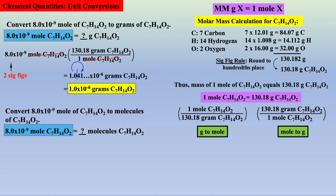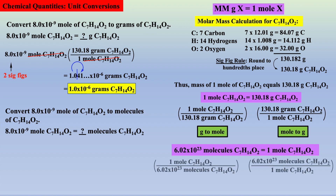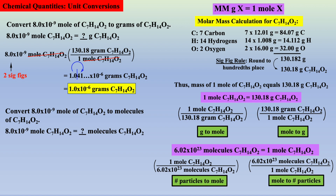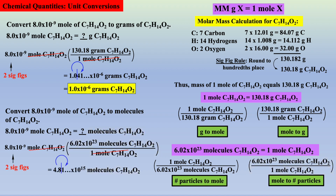Now let's convert the same number of moles of C7H14O2 to number of molecules of C7H14O2. First we need to write our definition: 6.02 × 10²³ molecules of C7H14O2 equal 1 mole of C7H14O2. We can always write two conversion factors — one to convert from number of particles to moles, and one from moles to number of particles. Starting with the given quantity, we use the moles to number of molecules conversion factor, moles cancel, giving the desired unit of number of molecules, and correcting for sig figs, we have our final answer.